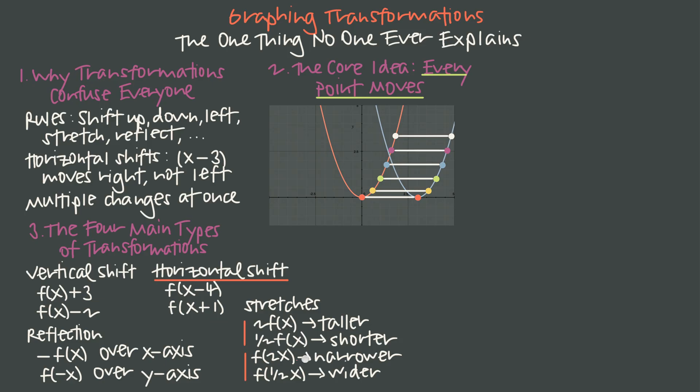These two are horizontal. If we multiply inside the function by a value greater than 1, it's going to compress or squish the graph so that it becomes narrower, whereas multiplying by a positive constant between 0 and 1, so a positive fraction like this, is going to pull or stretch the graph wider. So just remember, inside the function is always a horizontal transformation. Outside the function is always a vertical transformation.